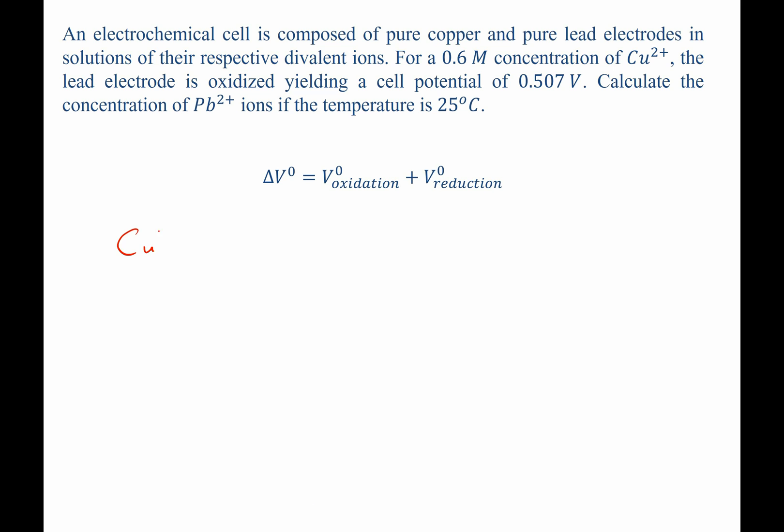We have copper 2 plus adding 2 electrons to form copper metal. Now we'll write lead metal giving up 2 electrons to form lead 2 plus ions. We know the reduction and oxidation potentials for these reactions. For copper, it's positive 0.340 volts. And for lead, it's now positive 0.126 volts.